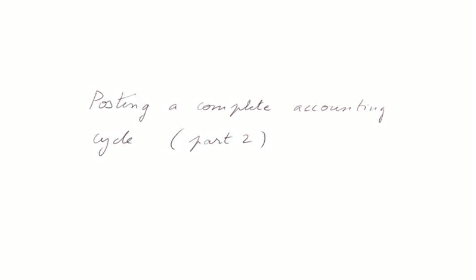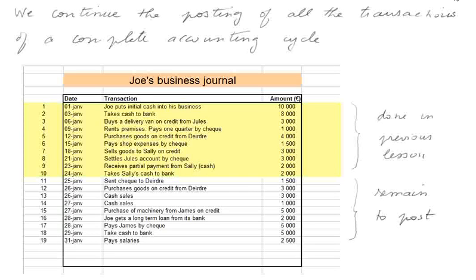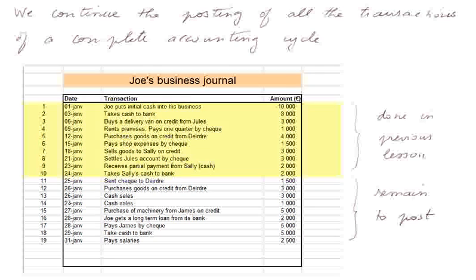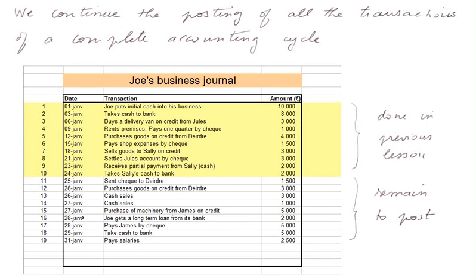Posting a complete accounting cycle, part 2. We continue posting all the transactions in a complete accounting cycle that we began in a previous lesson. We are posting all the transactions of Joe's business, a shop founded by Joe. We already treated 10 transactions in the previous lessons, and there remain nine transactions to post. So we shall start with transaction number 11.